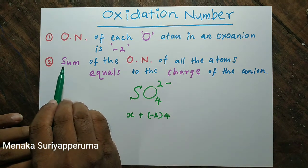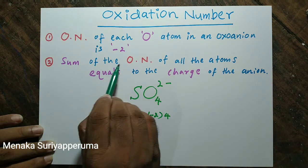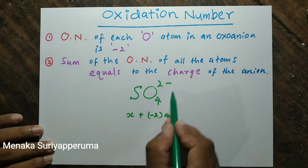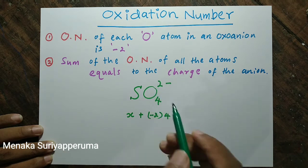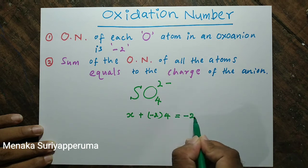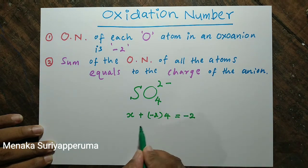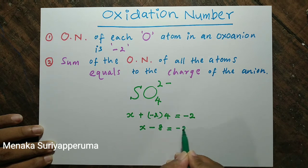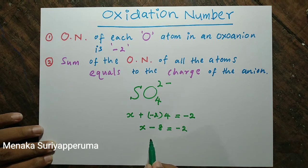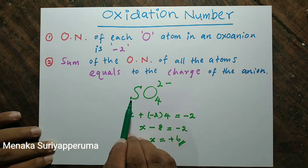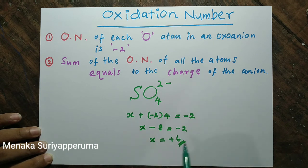Tip number two: the sum of the oxidation numbers of all atoms equals the charge of the anion. The charge of this anion is minus two. Therefore, all these equal minus two. Then X minus eight equals minus two. Therefore, X equals plus six. Therefore, the oxidation number of sulphur in sulphate is plus six.